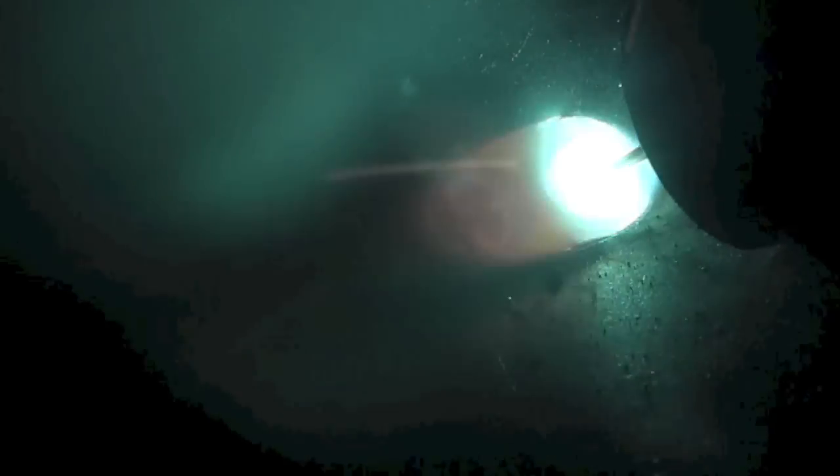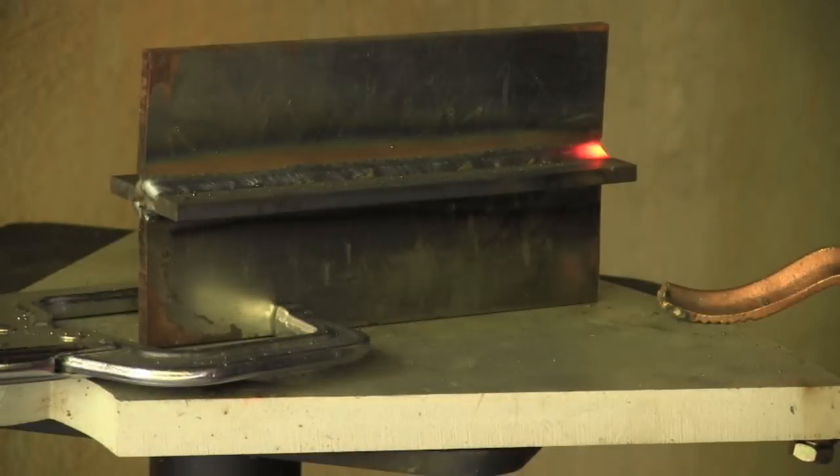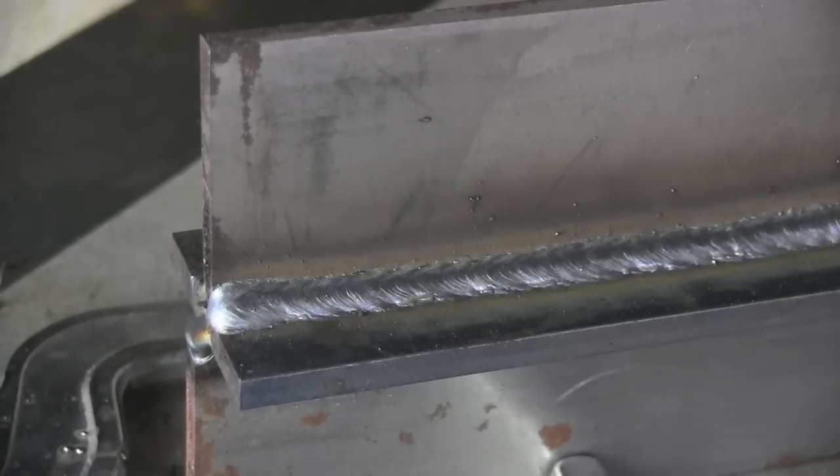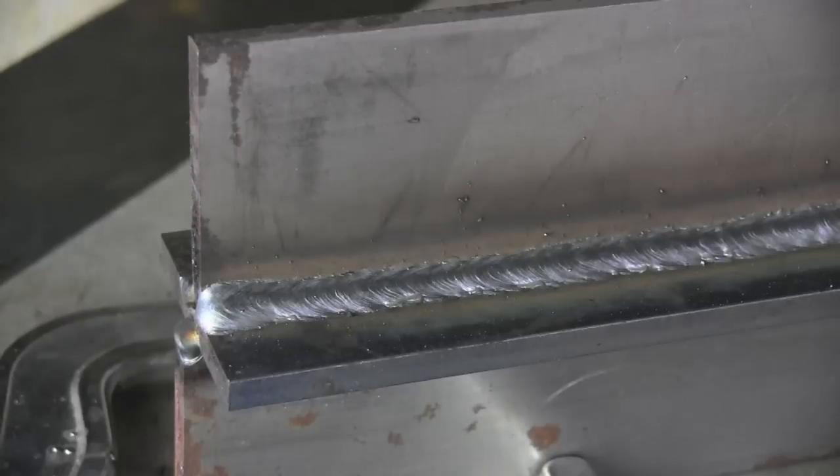I'm just using almost just a straight-on drag here. But I'm keeping the arc up toward the leading edge of the puddle. That's where the fusion and penetration takes place. You don't want to lay back in the puddle and let that puddle roll ahead. That's where you get cold lap and lack of fusion.